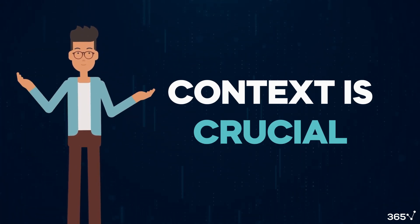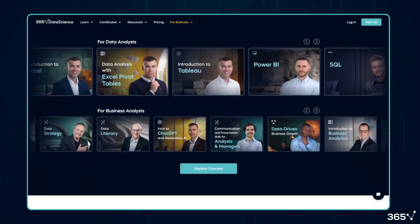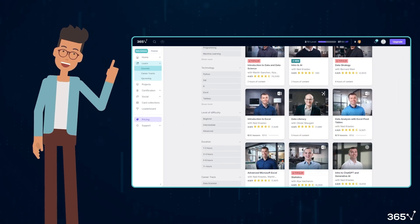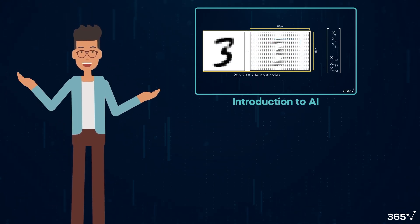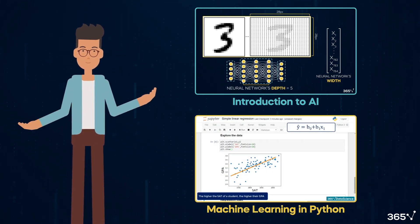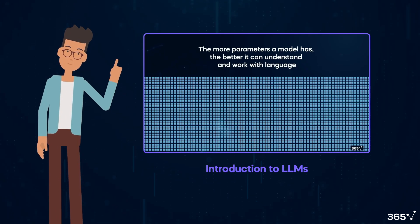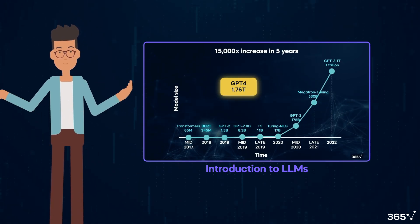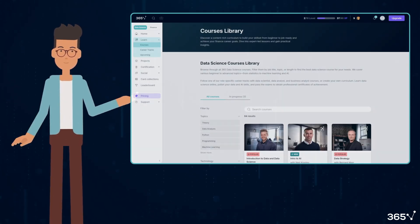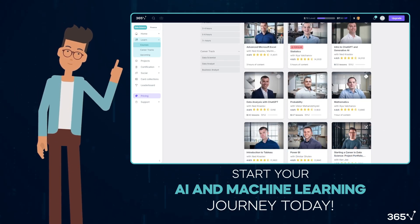So why am I telling you this story? This is a great analogy of how language models operate. But before we discuss LLMs, I'd like to introduce 365 Data Science's learning platform. If you're excited about AI and machine learning, we've got the perfect courses to get you started. Our Introduction to AI course provides a comprehensive overview of artificial intelligence, while our Machine Learning in Python course offers hands-on experience with popular ML libraries. And if you're specifically interested in LLMs, our Introduction to LLMs course teaches you to create AI applications, integrate OpenAI's API, and use tools like Langchain and Huggingface to build intuitive AI systems. 365 Data Science has something for everyone. Explore our full range of courses and start your AI and machine learning journey today.